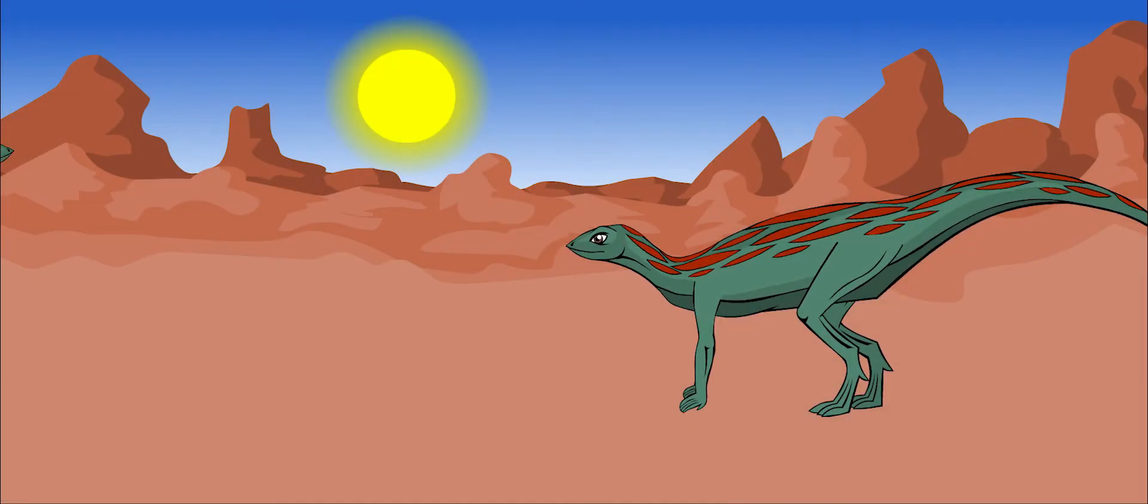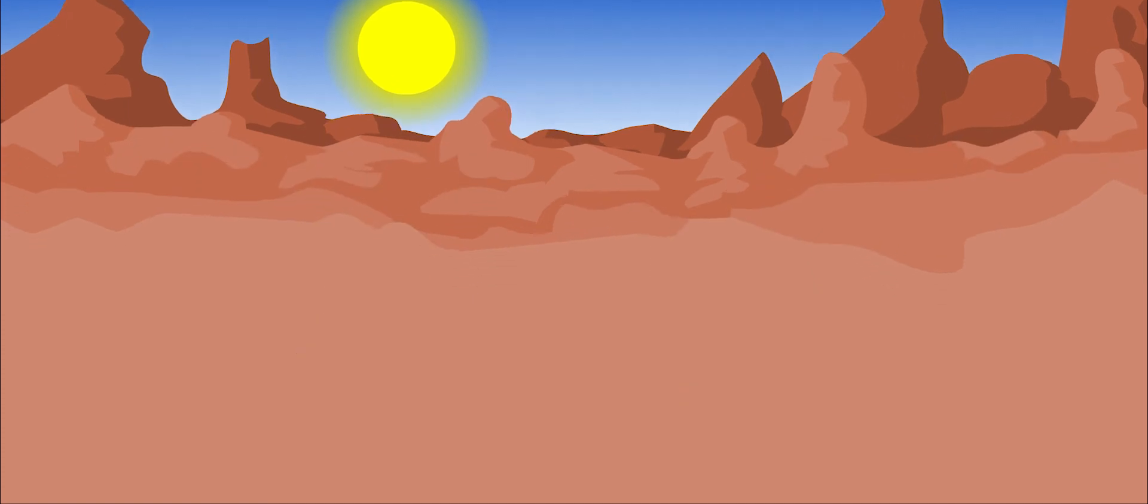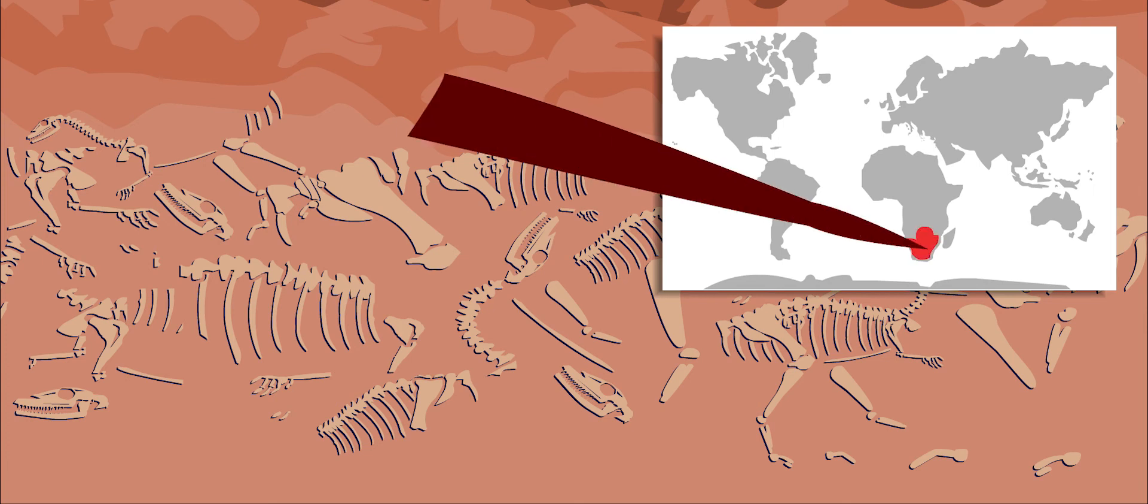Lesotosaurus lived in hot, dry areas. Its bones were found in what is now southern Africa. It was named after the place it was discovered, Lesoto.